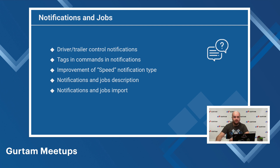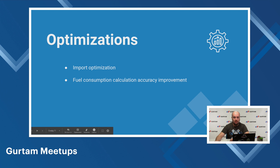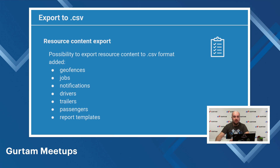Some other features: quick geofence editing — you can now simply press Ctrl and click with the mouse inside a geofence to open it for editing. New chart rendering: you can set the maximum interval between messages on the advanced tab in unit properties; for intervals with lost connections, the graph line changes from solid to dashed. Daily driving start time: if the driver activity option on the monitoring panel is turned on in unit properties, the tooltip with driving information will show the driving start time.